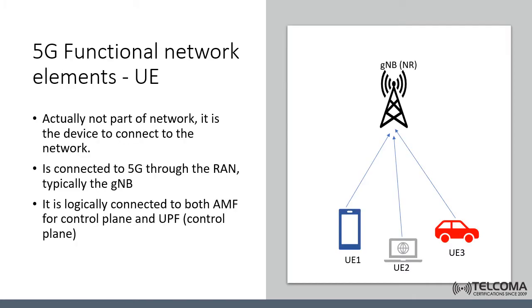Let's look at the 5G functional network elements, starting with the user equipment, the UE. The user equipment is used to connect to the 5G network and is not part of the network itself. It may be a device, an object, or a sensor depending on the application and use case. The UE is a terminal that connects to the radio access network and hence to the 5G services. It is logically connected to the AMF for control plane and UPF functions.